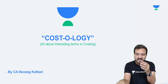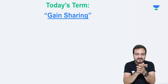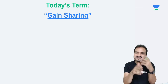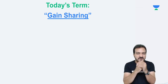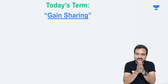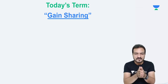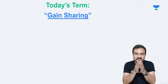My term for today is going to be a term called Gain Sharing. Now this word is a very misunderstood word in many ways. We will learn all about this term called Gain Sharing. This is from C.A. Final Costing Syllabus Chapter 2. Now, Gain Sharing — what exactly is it?